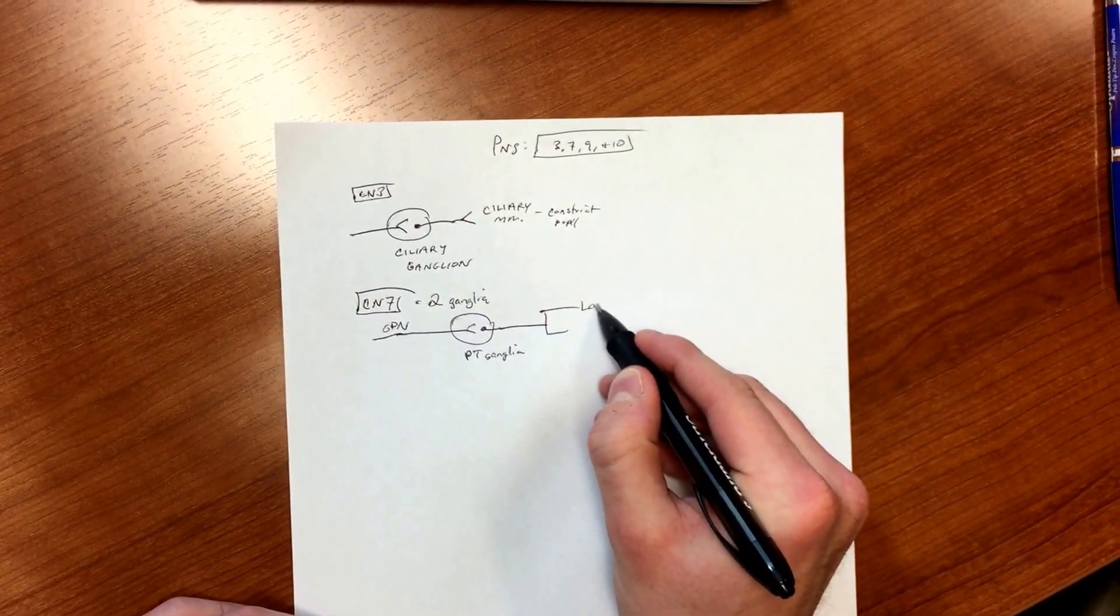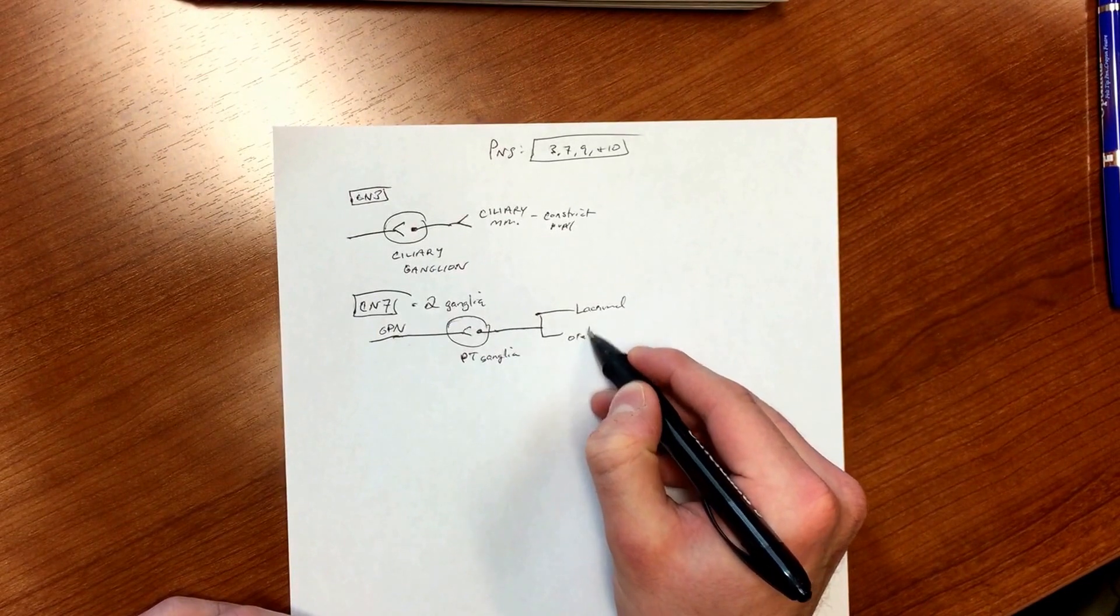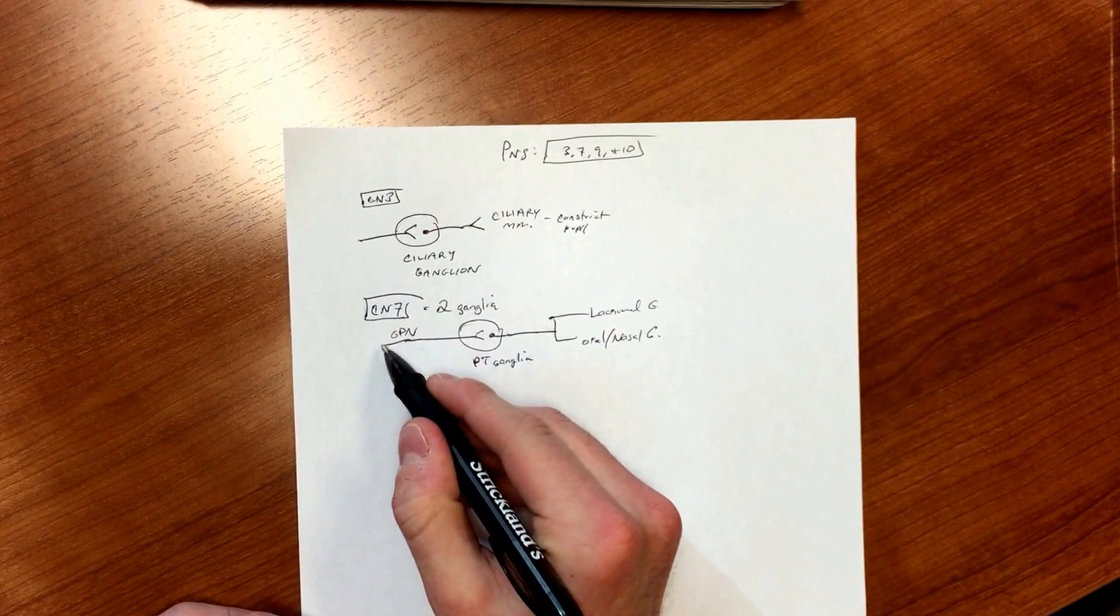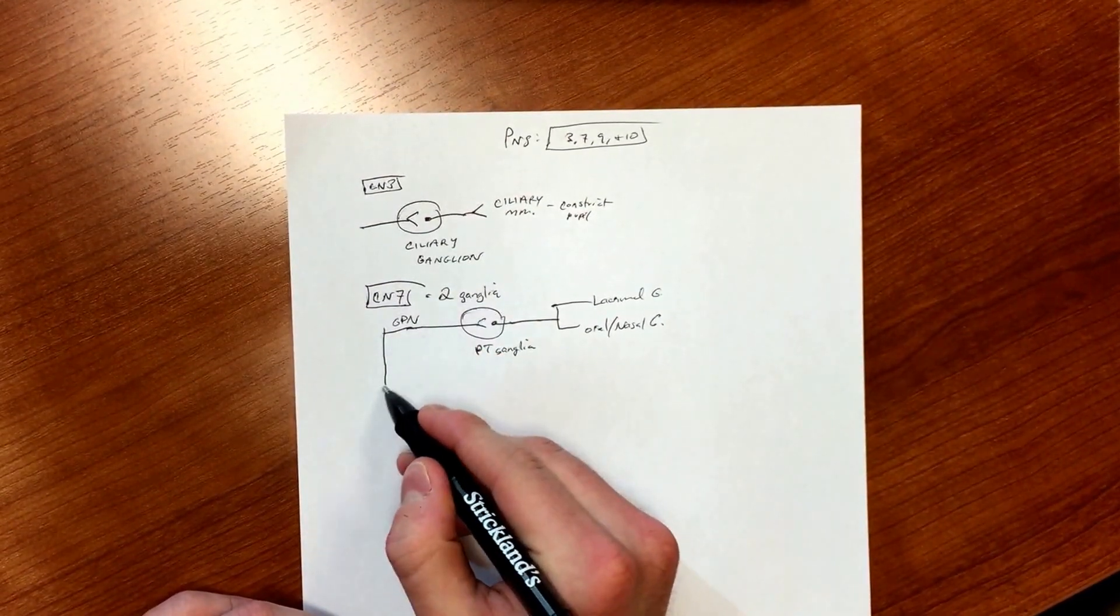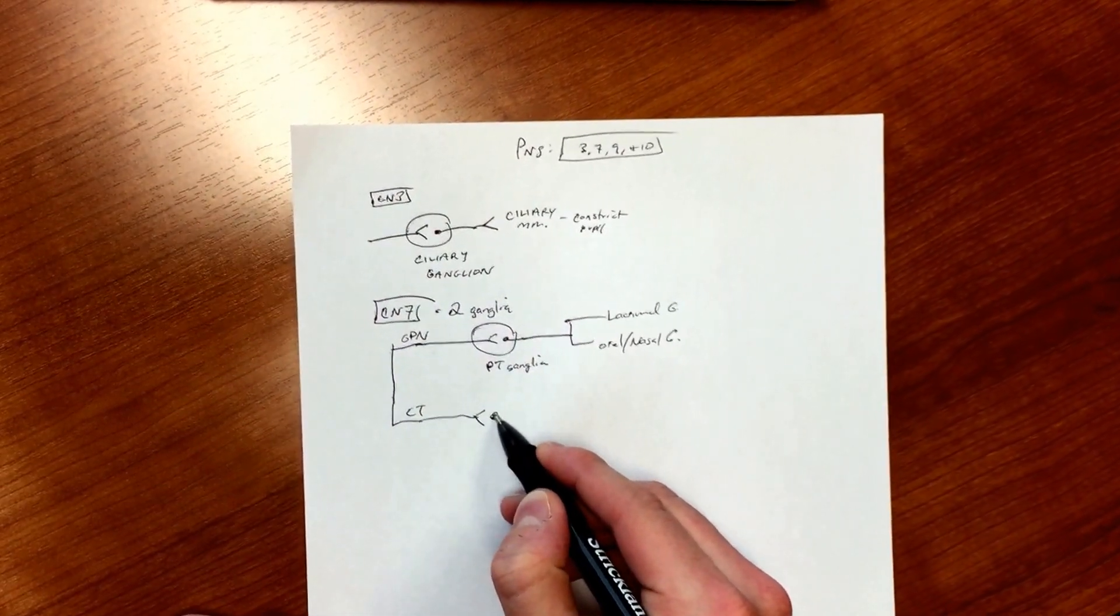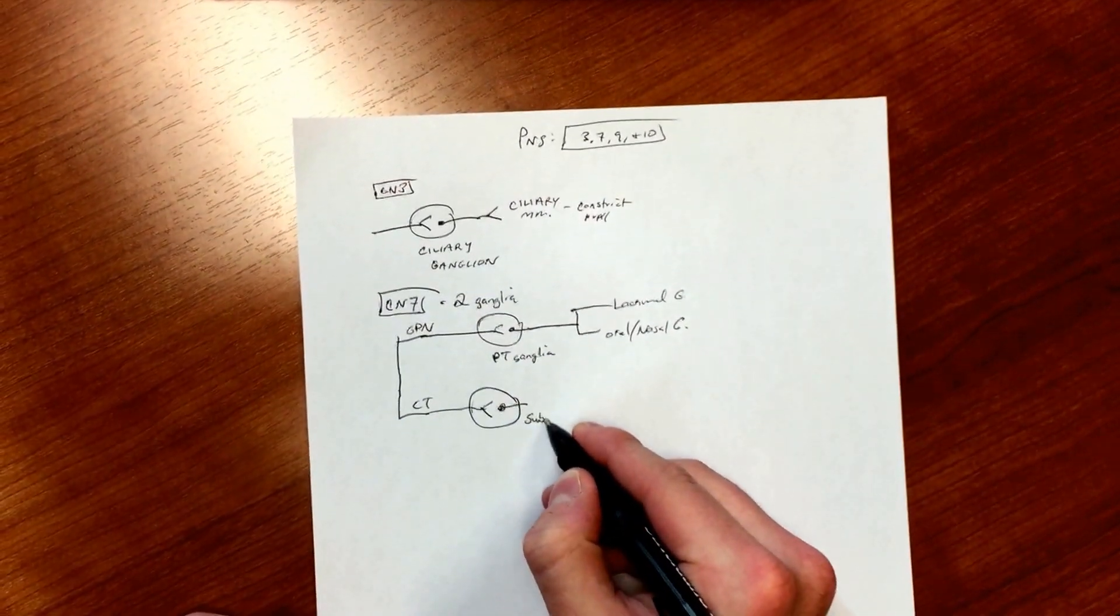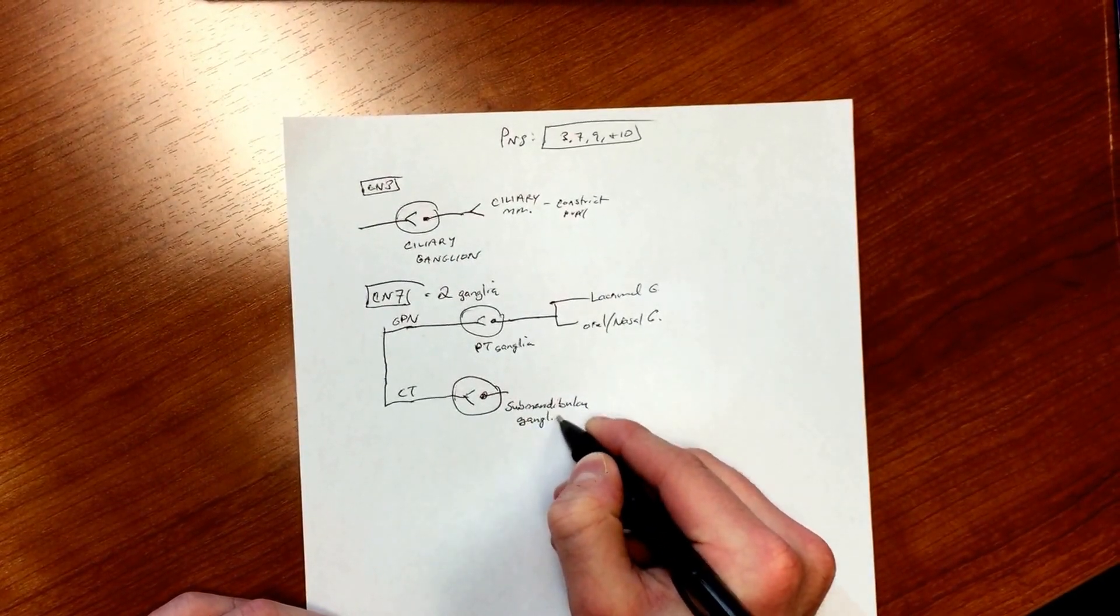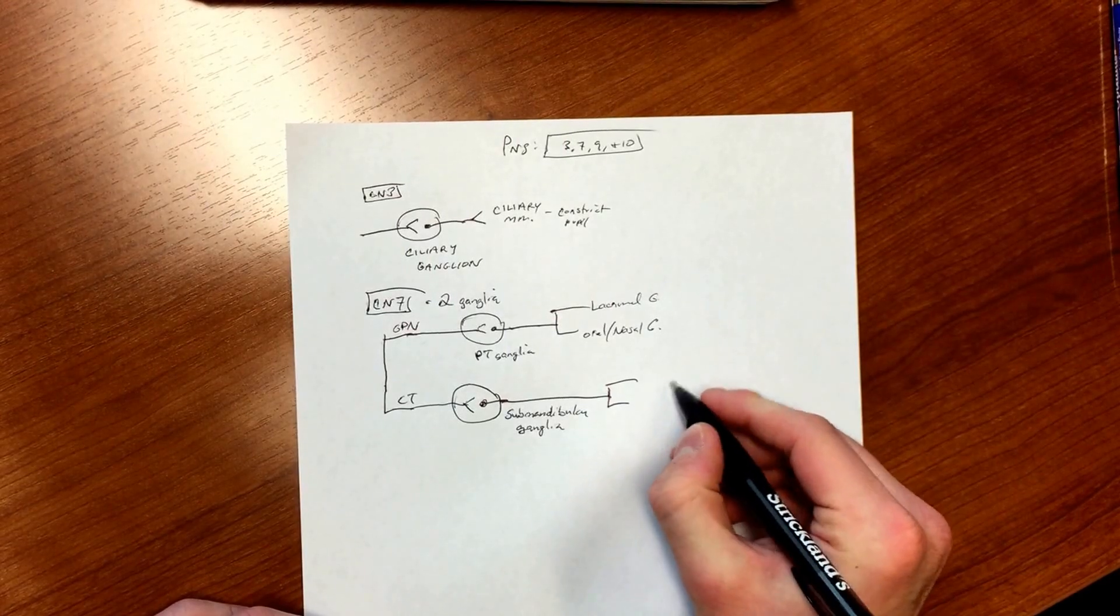Then the other branch for 7, that's your chorda tympani. Chorda tympani's ganglion is submandibular, okay? And then the fibers continue and they go to different places - submandibular ganglion or gland and sublingual.